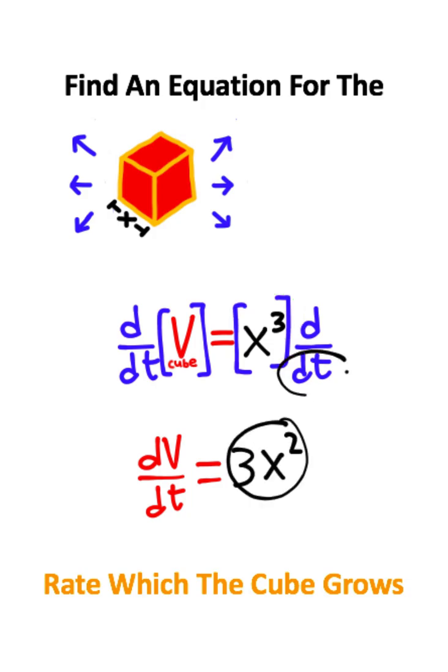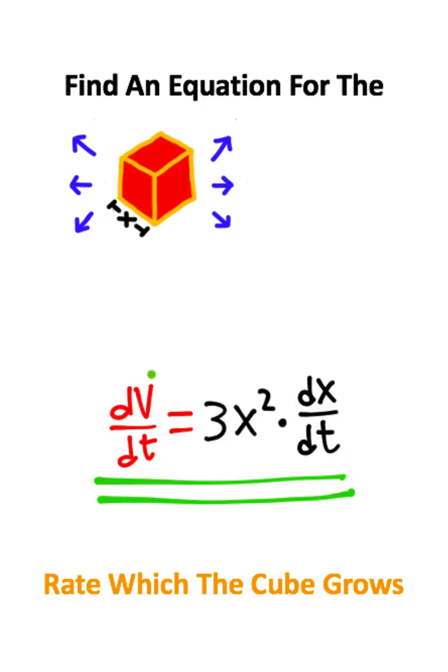But you need to show that you took this derivative with respect to t, so you need to multiply this by dx over dt, and notice how we end up with two derivatives in the equation.